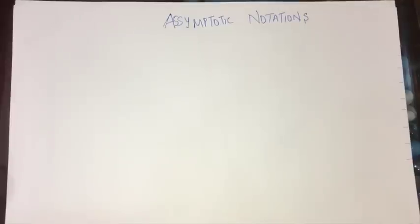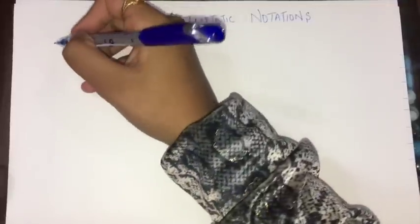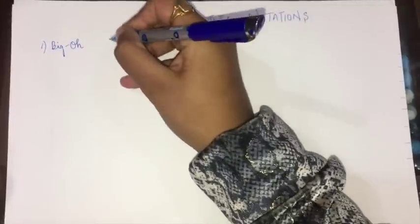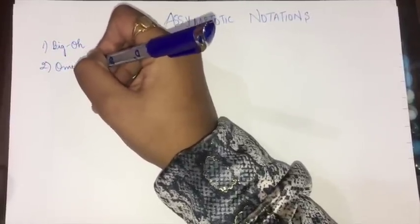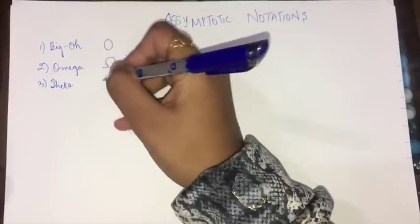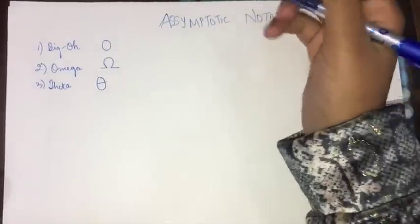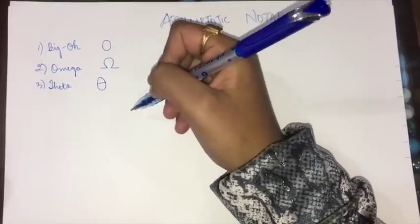Hello everyone, today we are going to study about a very important topic — asymptotic notations. There are three types: the first is the Big O notation, the second is the Omega notation, and the third is the Theta notation. We'll study them one by one, as they are used to find the complexity of various algorithms used to solve various problems.